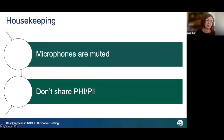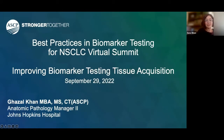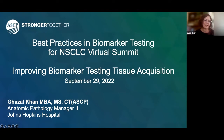A few final reminders before we start: please keep your microphone on mute until you raise your hand and are called on to speak during question times, and please do not share any protected health information or personally identifiable information about patients. We are delighted to welcome Gazal Khan, Anatomic Pathology Manager 2 from Johns Hopkins Hospital, to share with us an approach to quality improvements in tissue acquisition and processing. I'll turn it over to Ms. Khan to begin.